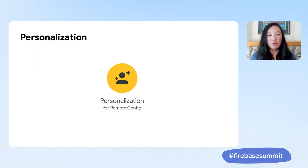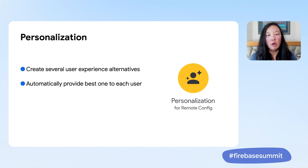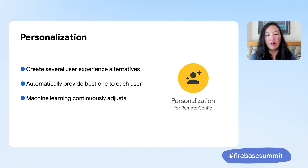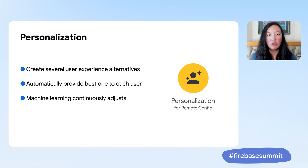Personalization is a powerful new feature that enables you to create several user experience alternatives and automatically provide the best one to each user based on a metric goal that you choose to maximize. It uses machine learning, efficiently trading off between learning the best experience for different types of users and making use of that knowledge to maximize your objective. This means not only will it find the best experience for each user, it will also be able to learn and adjust to changing user behavior, always finding the best experience at any given time for a particular user.